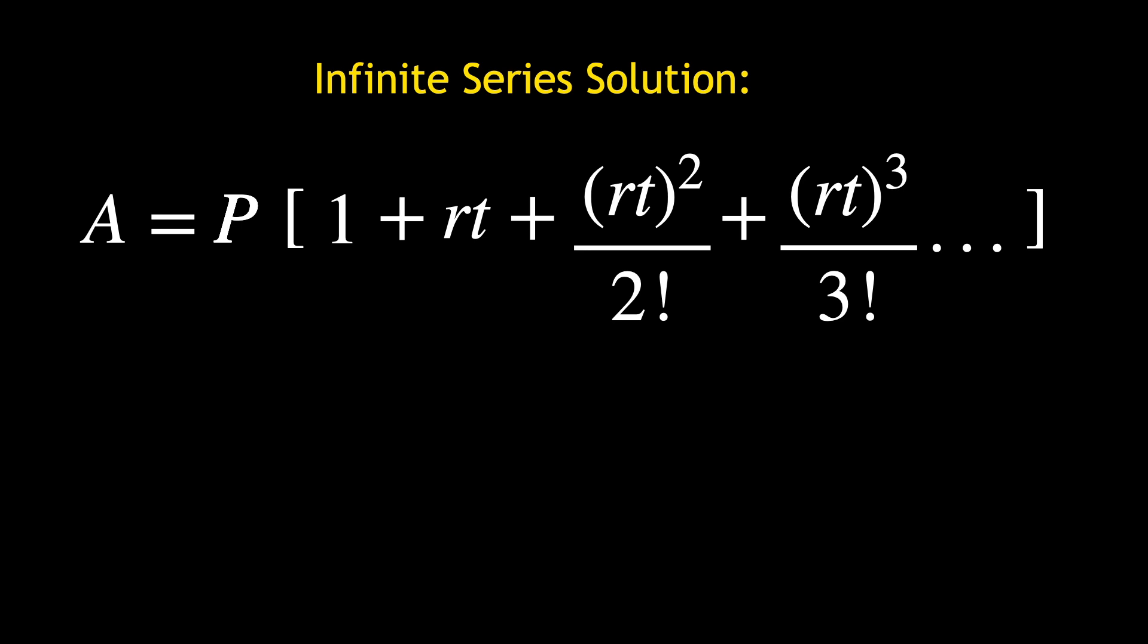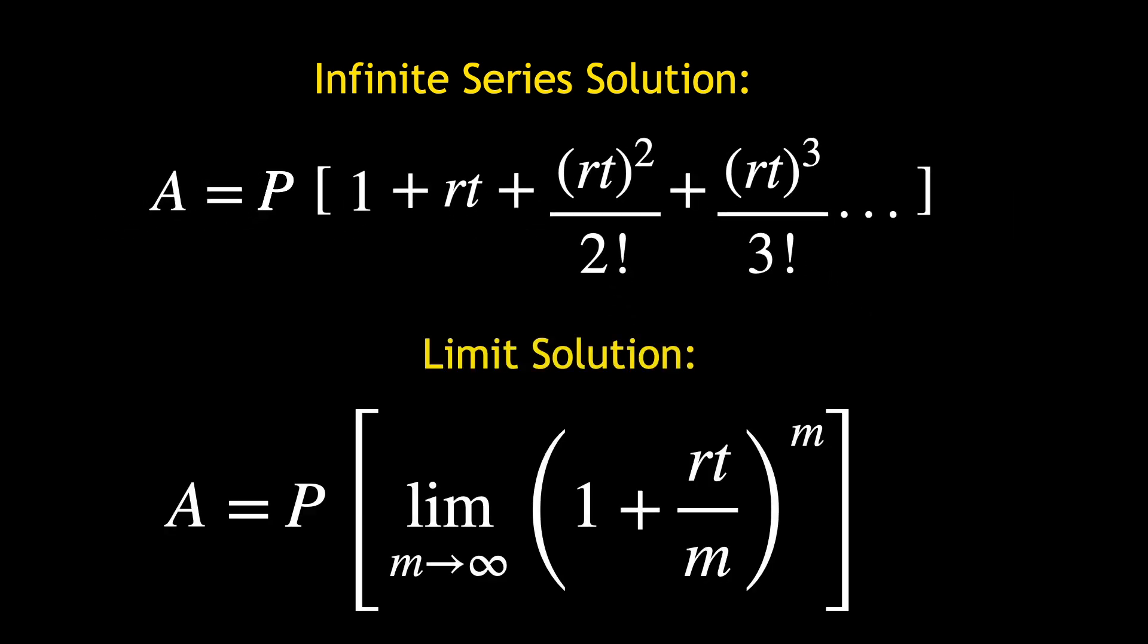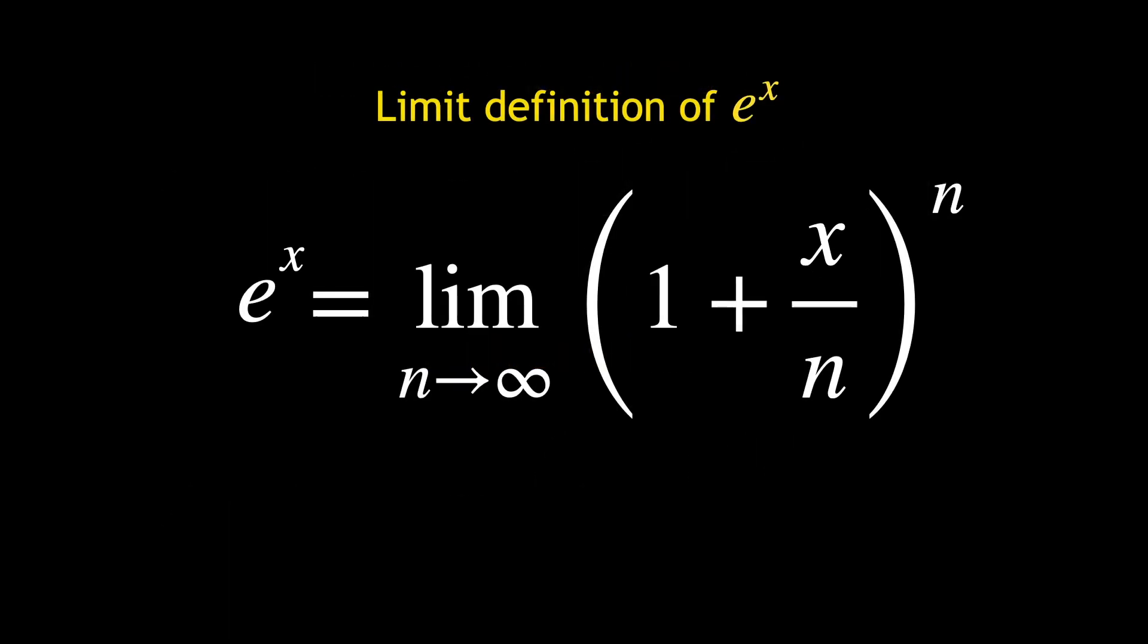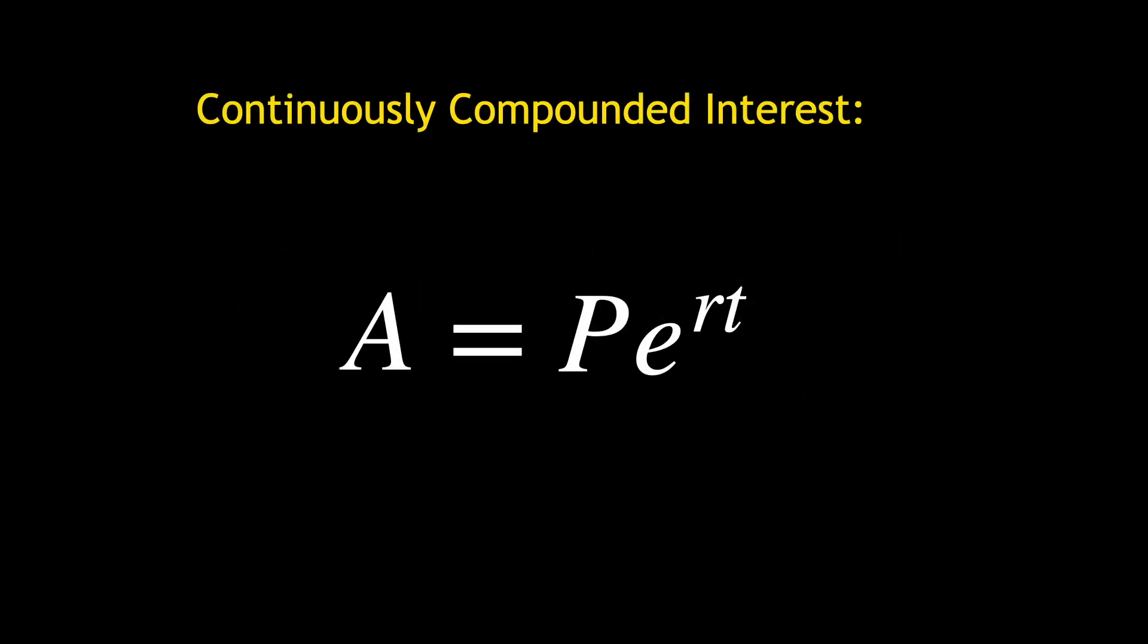But recall that we've already solved the problem another way when we obtained the limit solution, which was the original motivation for defining E, or equivalently, the function E to the X. With those definitions, we wrote the limit solution as A equals P E to the RT.